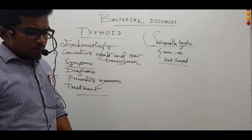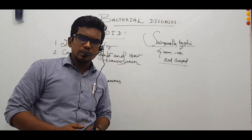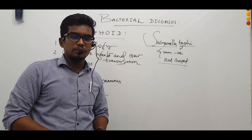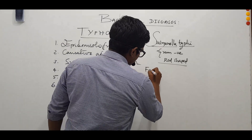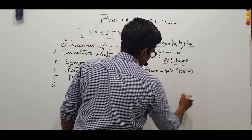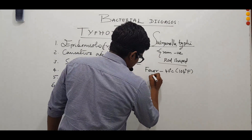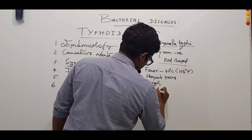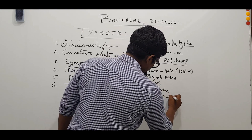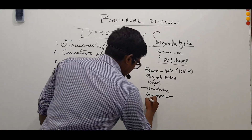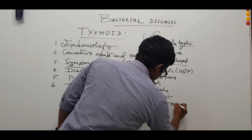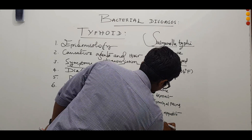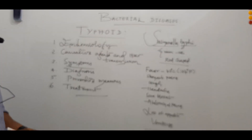Moving to the symptoms: it may take around one to two weeks to develop symptoms, and in many specific cases it requires around three weeks to show up. Symptoms include high fever even up to 40 degrees Celsius, that is 104 degrees Fahrenheit. We also observe stomach pains, cough, headache, sore throat — which basically means pain in the throat with inflammation — abdominal pains, loss of appetite, and vomiting.